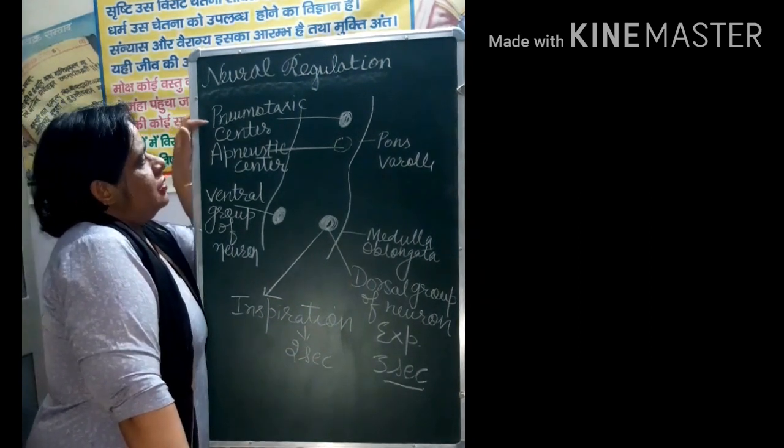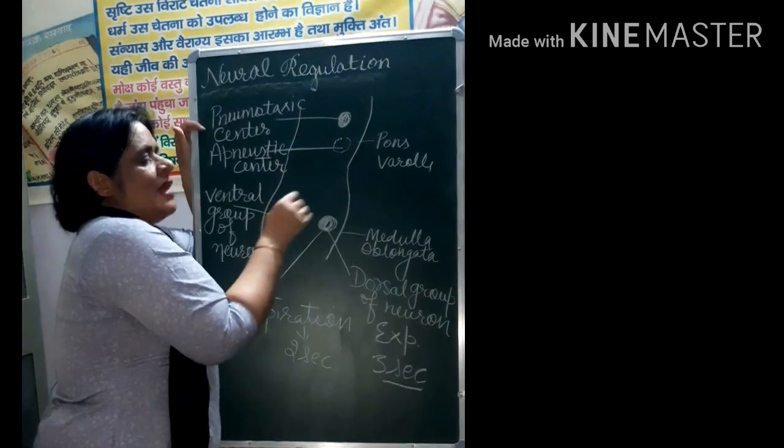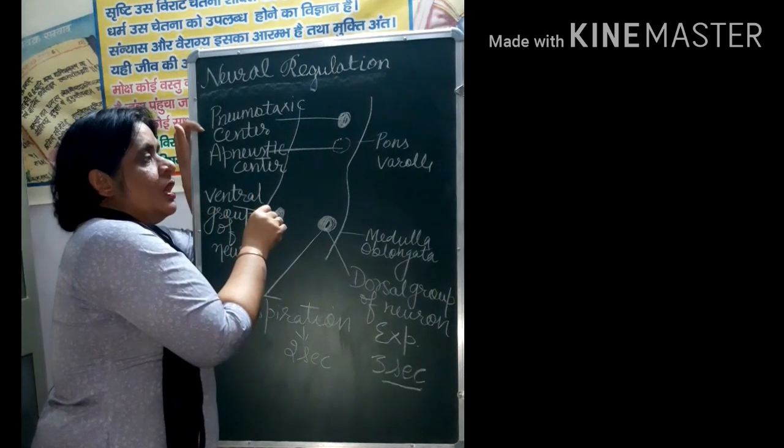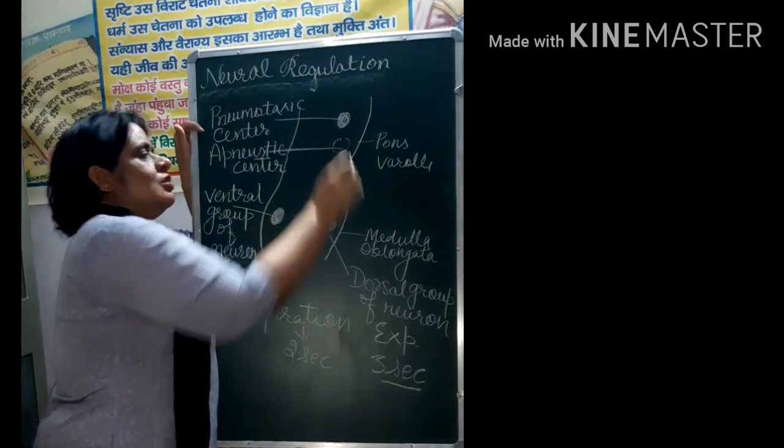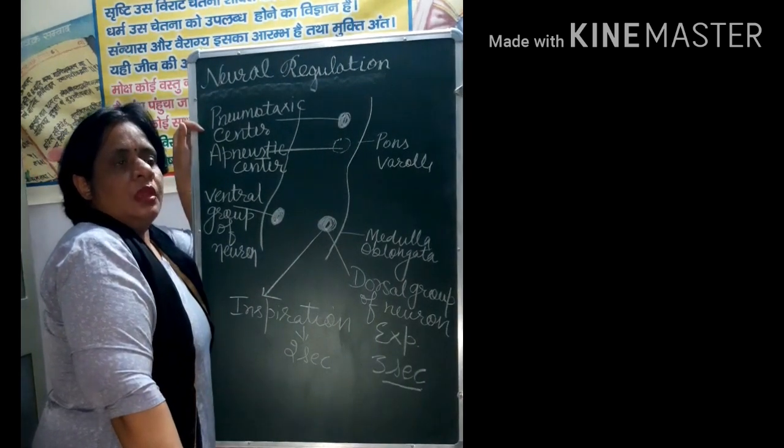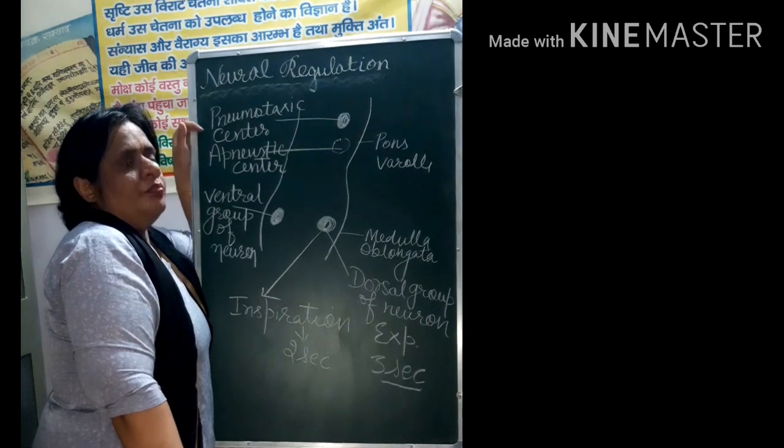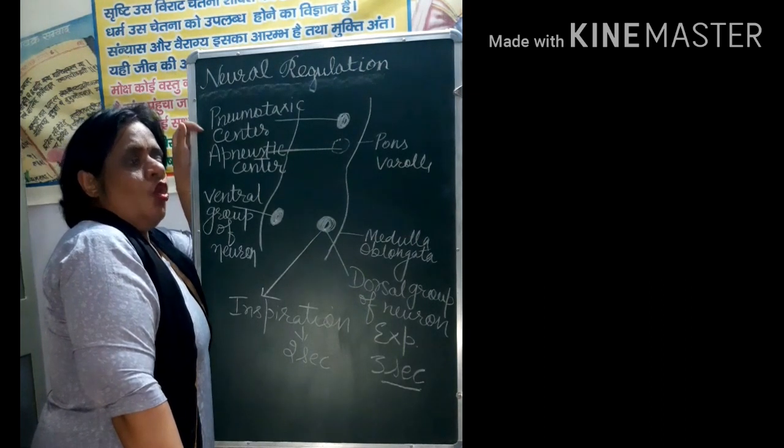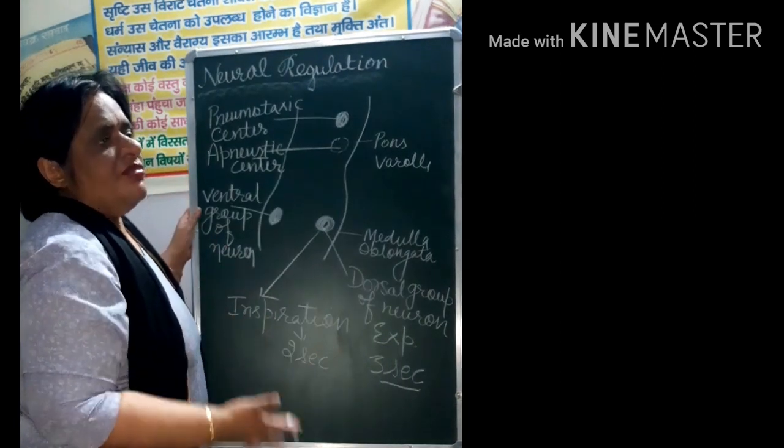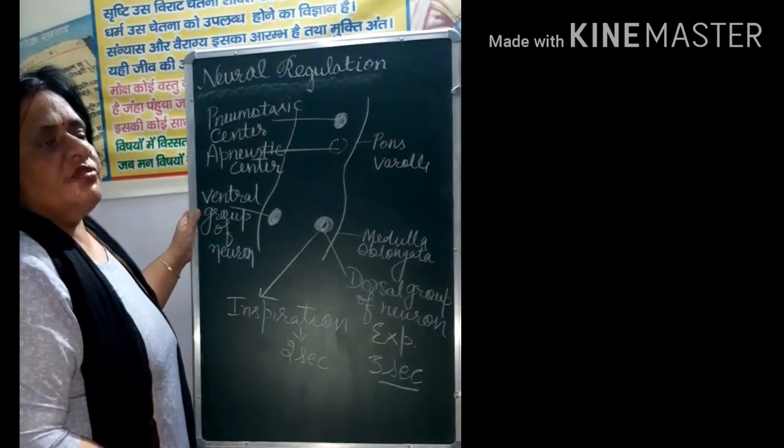We have a certain pneumotaxic center. Pneumotaxic center it regulates both these centers, dorsal group of neuron and ventral group of neuron. If we talk about apneustic center, apneustic center is hypothetical center and it controls the depth of breathing.